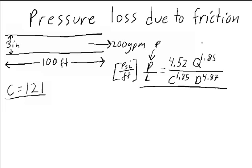So Q is the flow rate in terms of gallons per minute, and D is the diameter of the pipe in terms of inches, and C is our friction factor coefficient. So we can plug our values in here.